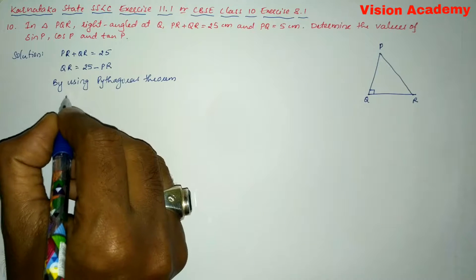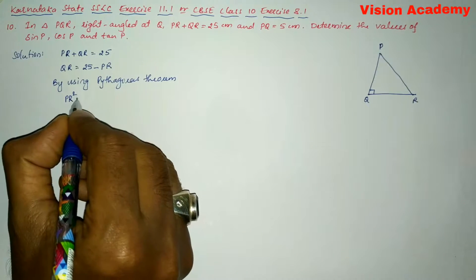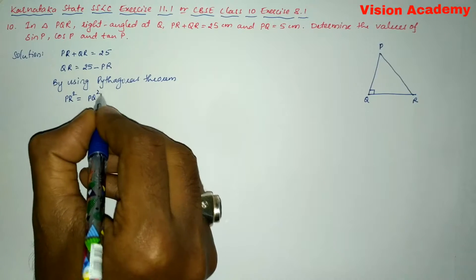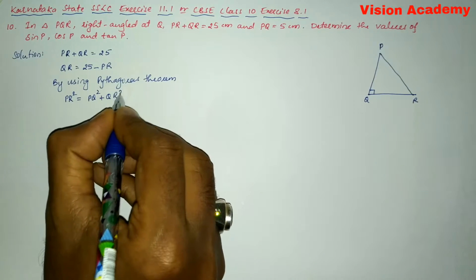So here PR square is the hypotenuse and PQ square plus QR square.